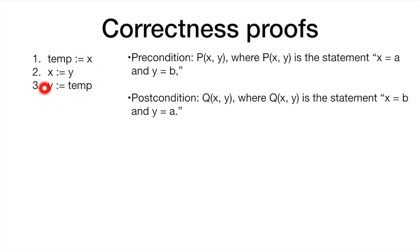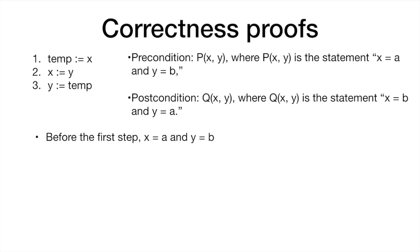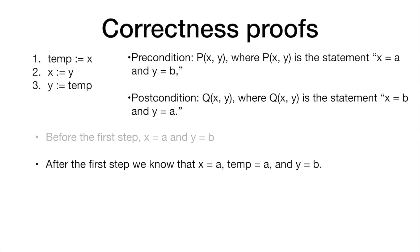We enumerate the steps of the algorithm and keep the precondition and postcondition visible. Before the first step, x equals a and y equals b, because we assume the precondition holds. After the first step, x is still equal to a and y remains the same, and the variable temp will be equal to a — which is what we did in the first step. After the second step, x equals b because we assign the value of y to x, while temp and y remain the same.